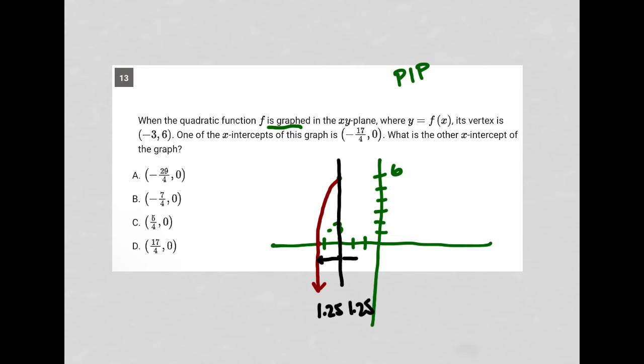So to the right from negative 3, 1.25 units is the same as saying negative 3 plus 1.25, and that's going to equal negative 1.75. That's where that should be, which is around there.